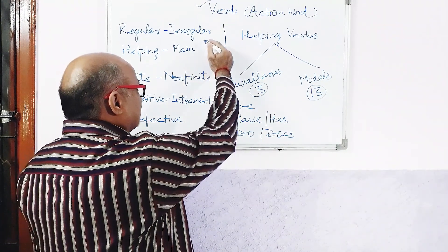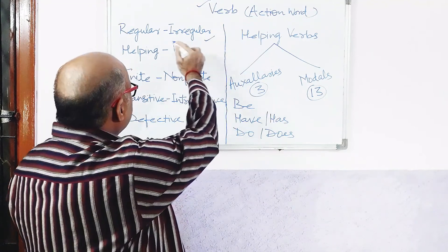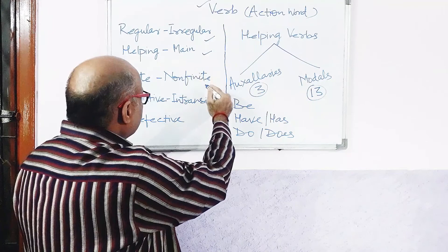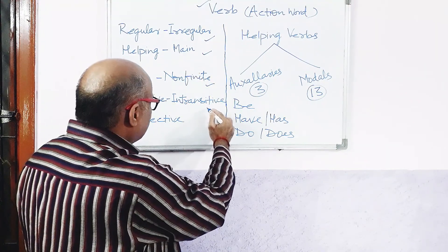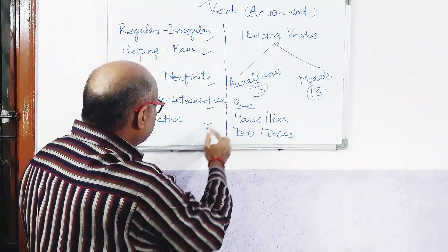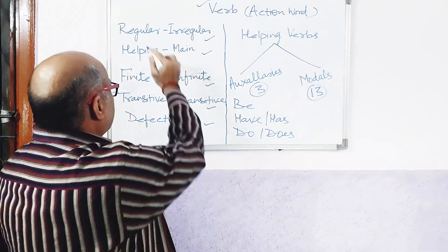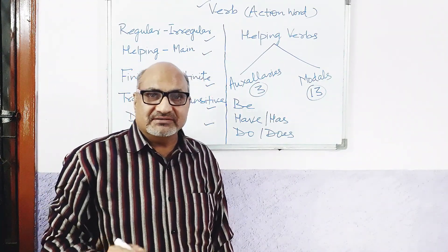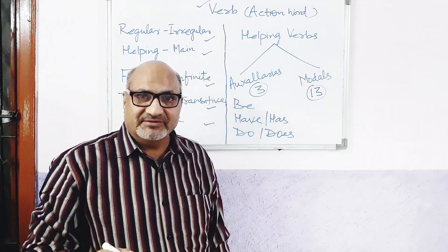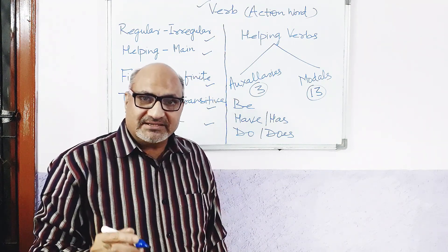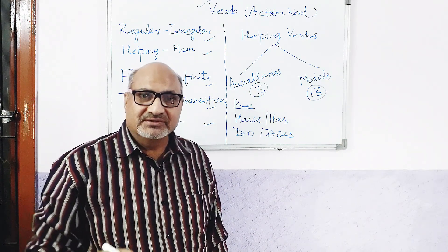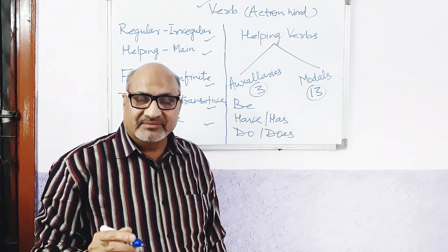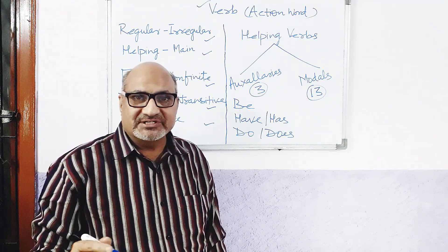As regards categories, I have already mentioned the first one: regular and irregular, helping and main, finite and non-finite, transitive and intransitive, and defective verbs. Regarding regular and irregular, I have already mentioned in my previous video that regular verbs are those verbs which take ED to form their second and third form, past tense or past participle form.